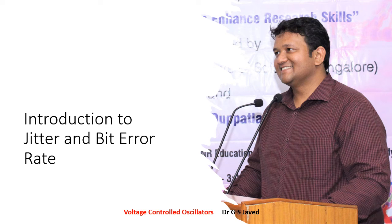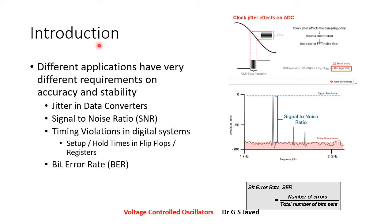This is an introduction to jitter in clocks and bit error rate for various data rates. There are different applications which have different requirements of timing accuracy and stability. In data converters, jitter is the amount of input edge variation that gives an error in the output edge variation. As the clock jitter affects the sampling point in a signal, jitter impacts something called a measurement error, which we can attribute to quantization error, noise error, instrumentation error, or other measurement errors.